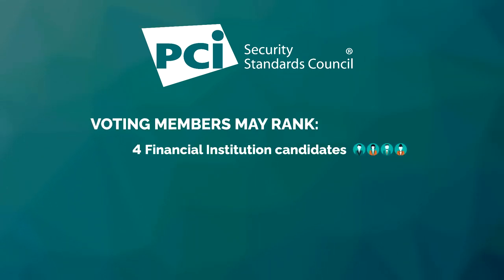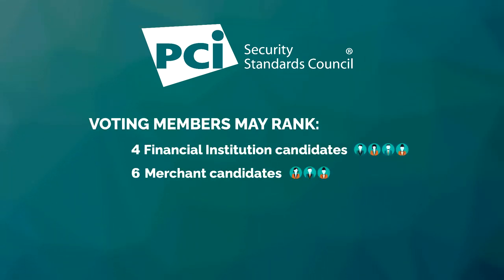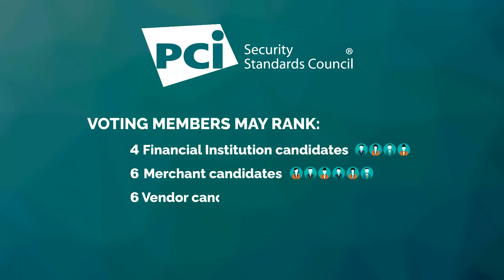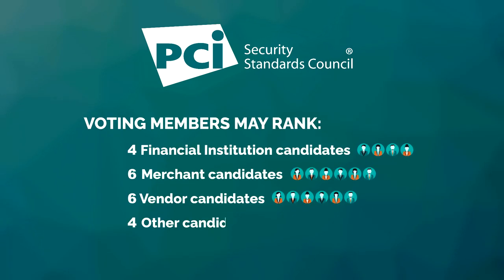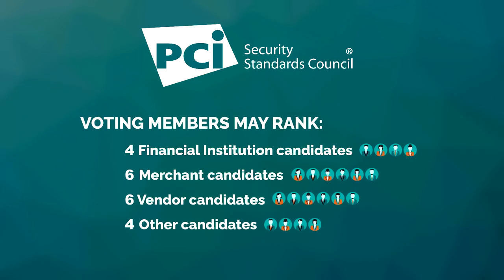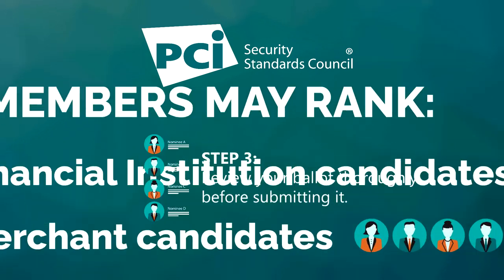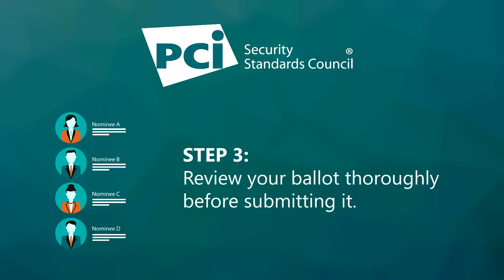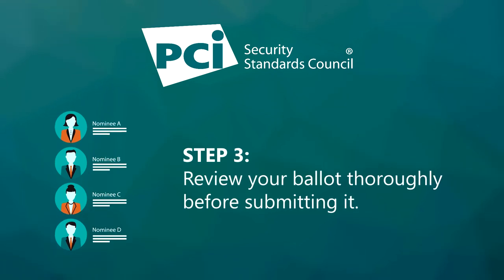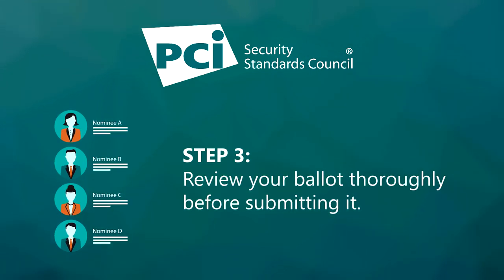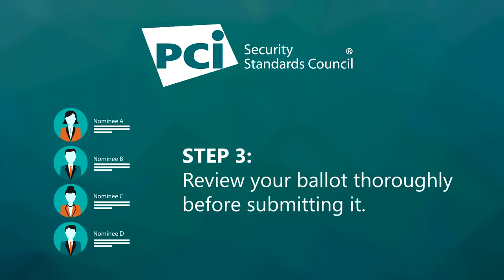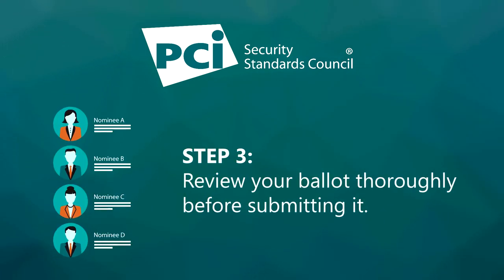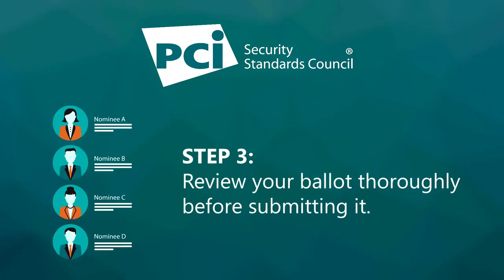Voting members may rank up to six financial institution candidates, six merchant candidates, six vendor candidates, and four other candidates. Review your ballot thoroughly before submitting it — once you have submitted your ballot, you will not be able to change your choices.